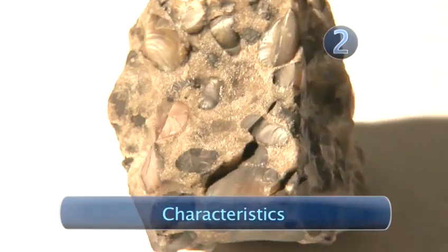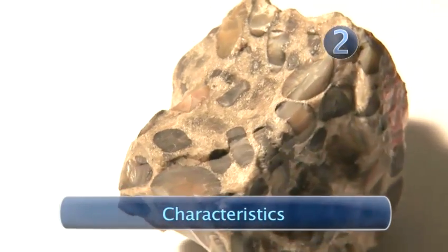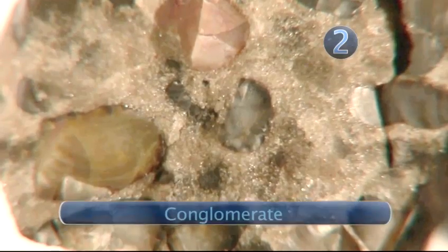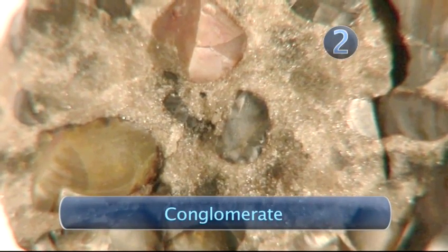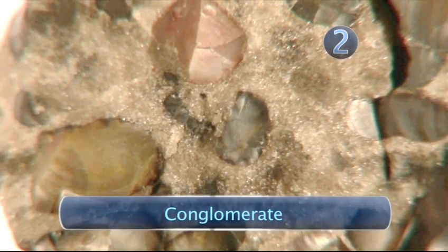Step two: characteristics. This is a conglomerate, and you can see the rock particles in here. They're quite large, rounded pebbles. But not all sedimentary rocks consist of mineral grains or rock grains.